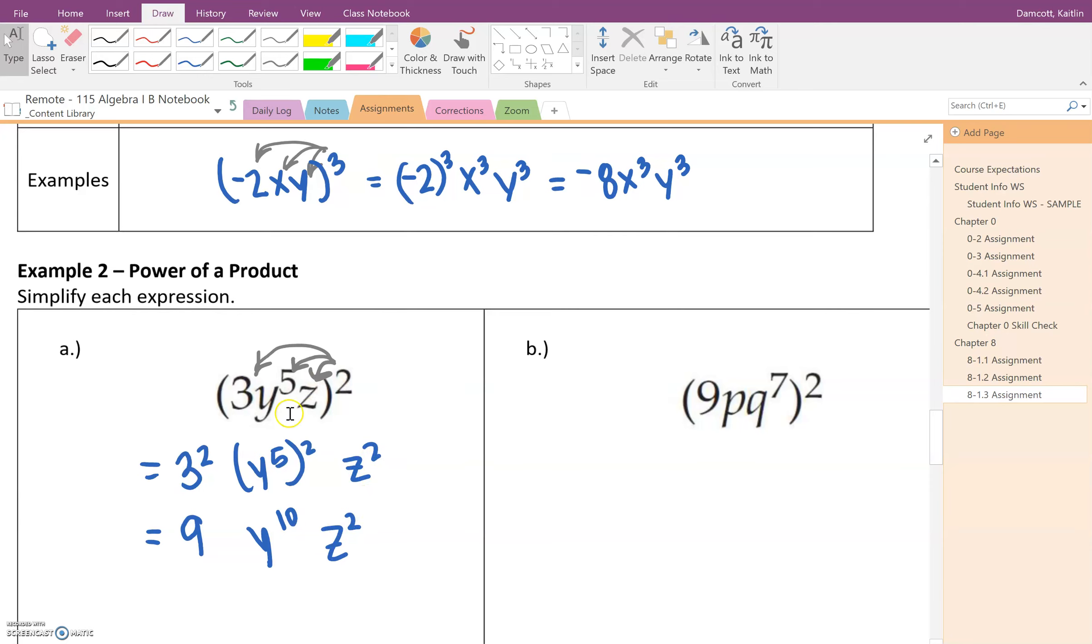And then z squared is already in a good spot. So our answer, this is our answer. Like we're given the expression, and this is the answer in a simplified form. So we distribute the exponent to each factor, and then we just simplify those pieces.